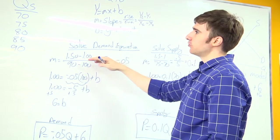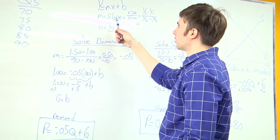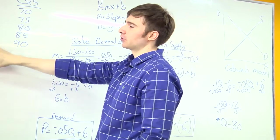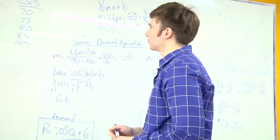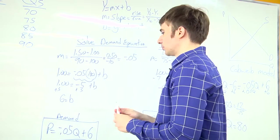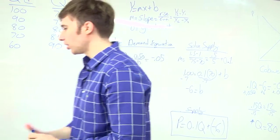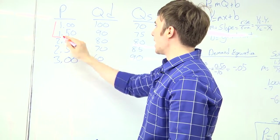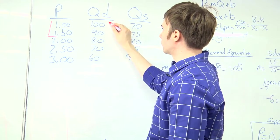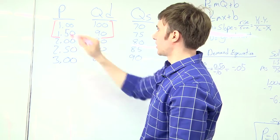So the first thing I need to do is I need to solve for slope. So I come back to my raw data and I need to pick any two data points. So I chose $1.50 and $1.